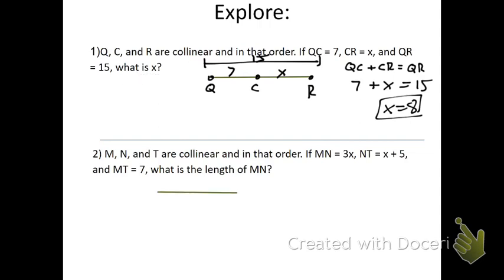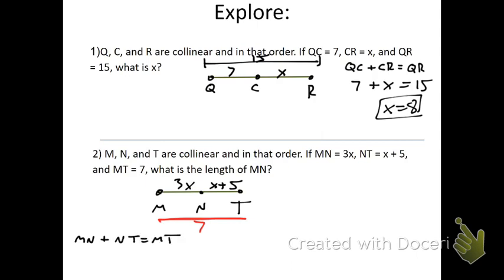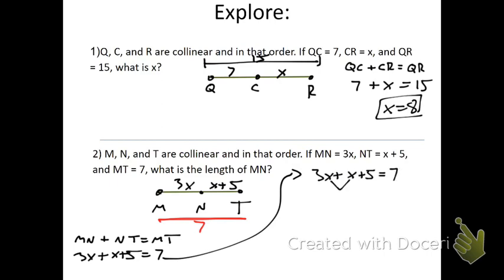The next one tells me that M, N, and T are collinear and in that order. So we have M, then N, then T. If MN equals 3X, NT equals X plus 5, and MT — the whole thing — has a length of 7, what is the length of MN? We know MN plus NT equals MT, so we set up the equation: 3X plus X plus 5 equals 7. Combining like terms: 4X plus 5 equals 7. Subtracting 5 from each side gives 4X equals 2. Dividing by 4 on each side, X equals one half.